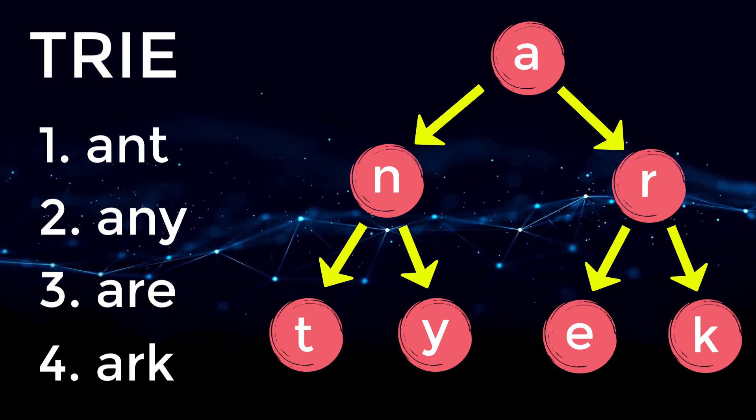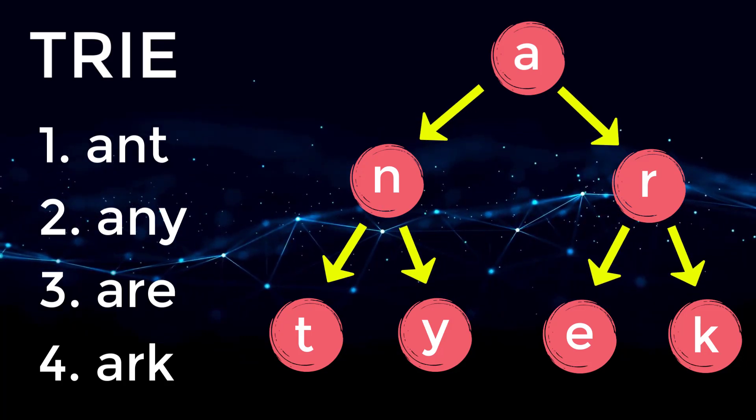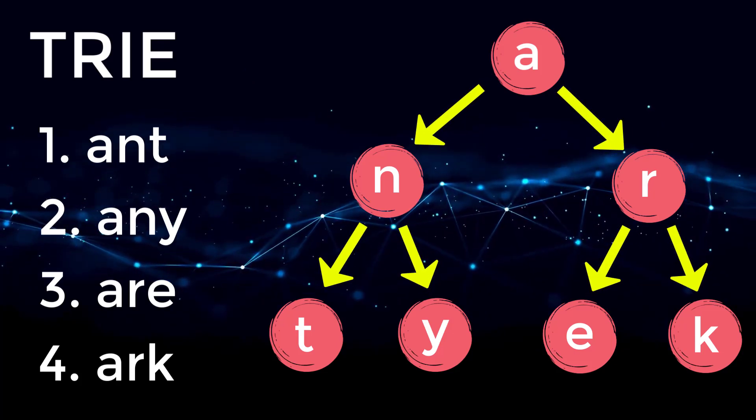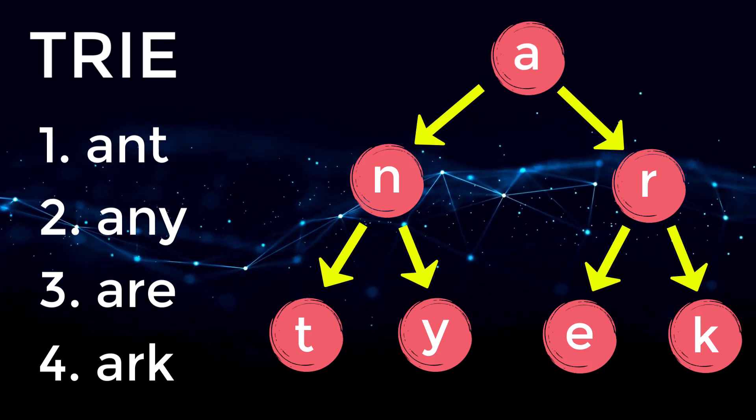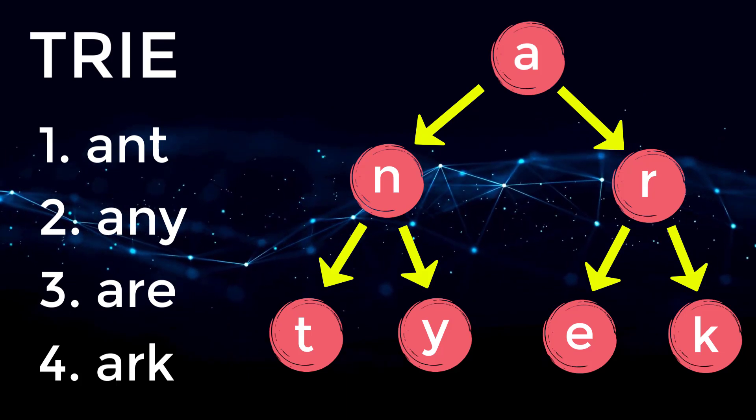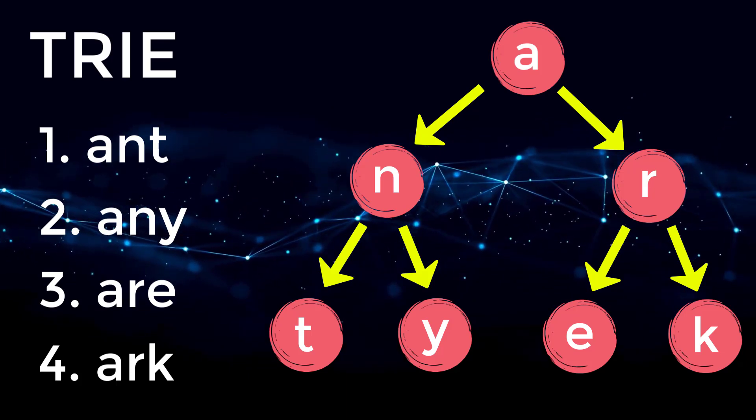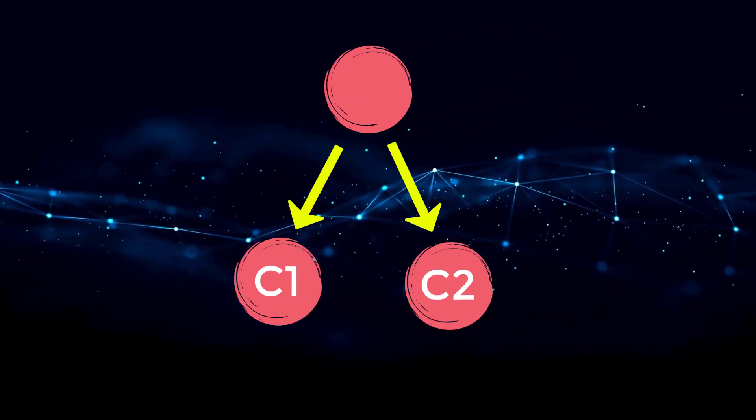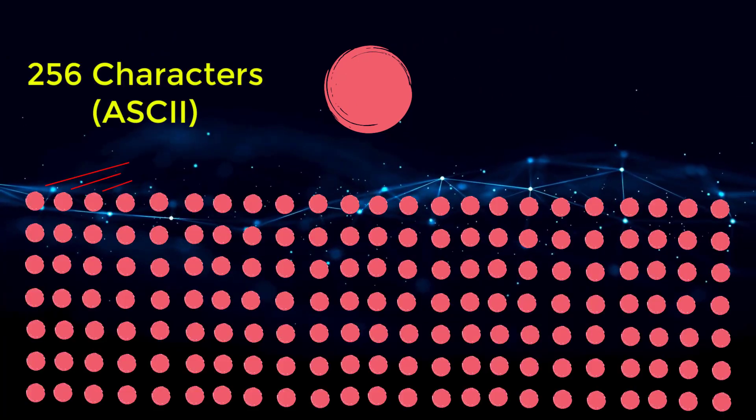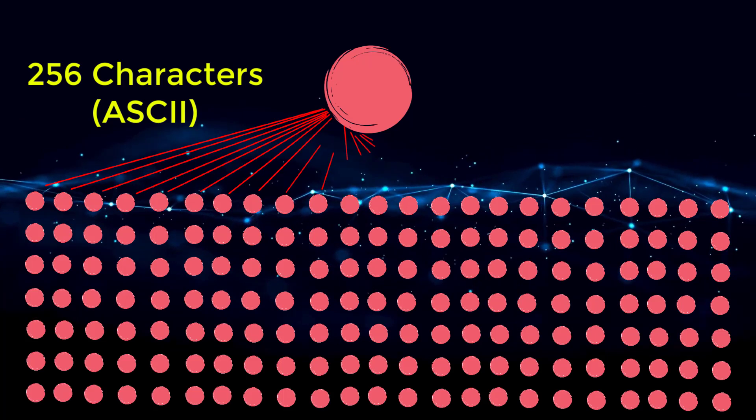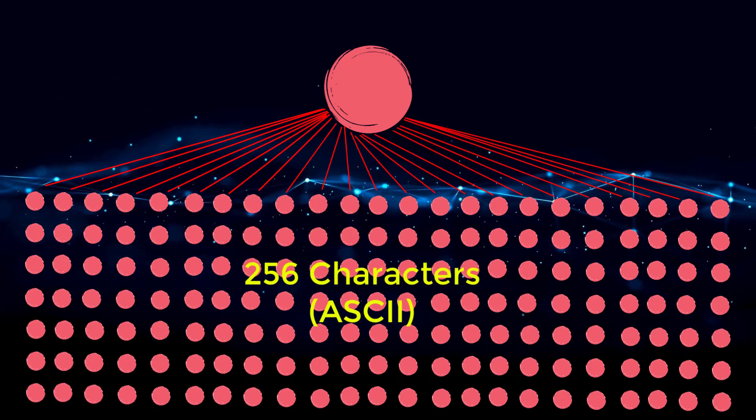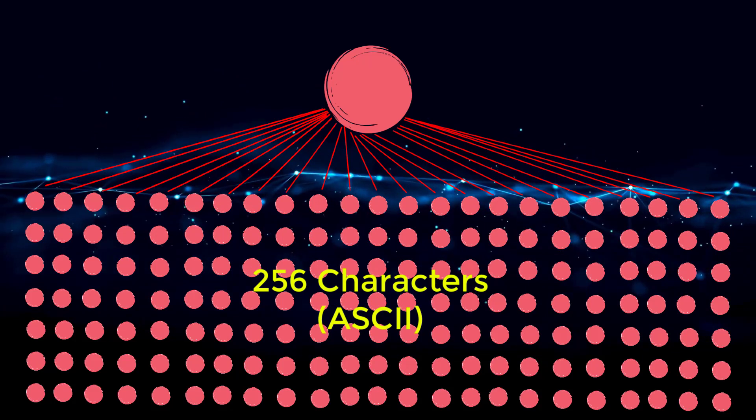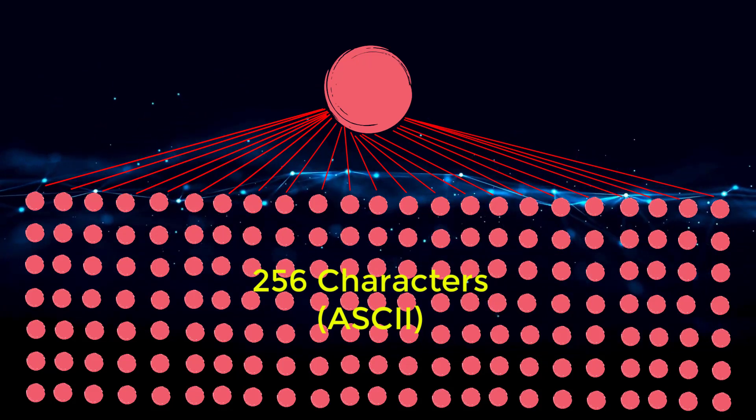So using this data structure, you can traverse branches of the tree to search for specific words or prefixes of those words. You can also search for suffixes depending on how the data is inserted inside of your trie. The interesting part about this data structure is every single node can have a character as a child. So if we have 256 available characters, that means for every single node inside of our trie, we could have 256 children.